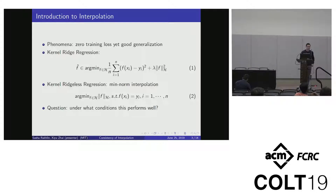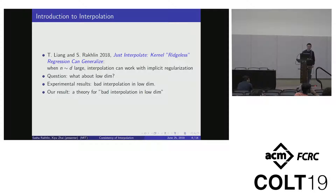The particular algorithm we are going to study is kernel ridge regression — kernel ridge regression with the regularizer being zero. The question is under what conditions we can have consistency of interpolation. In 2018, a paper by Tengyuan Liang and Sasha Rakhlin showed that under some circumstance, when N grows linearly with D, interpolation can work with implicit regularization.